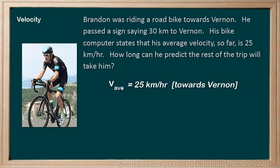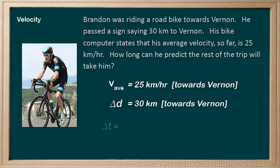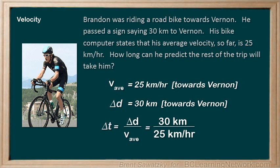So, back to the question. The displacement he'll be traveling is 30 kilometers towards Vernon, or the same as saying change in position — delta D is 30 kilometers. Now, we're looking for the time, so we'll use the formula rearranged for time. We plug in our numbers and get a delta T of 1.2 hours. We know that it's hours since the velocity was in kilometers per hour, and the kilometers cancel each other out. So the delta T being 1.2 hours means it'll take him 1.2 hours more to reach Vernon, as our prediction.